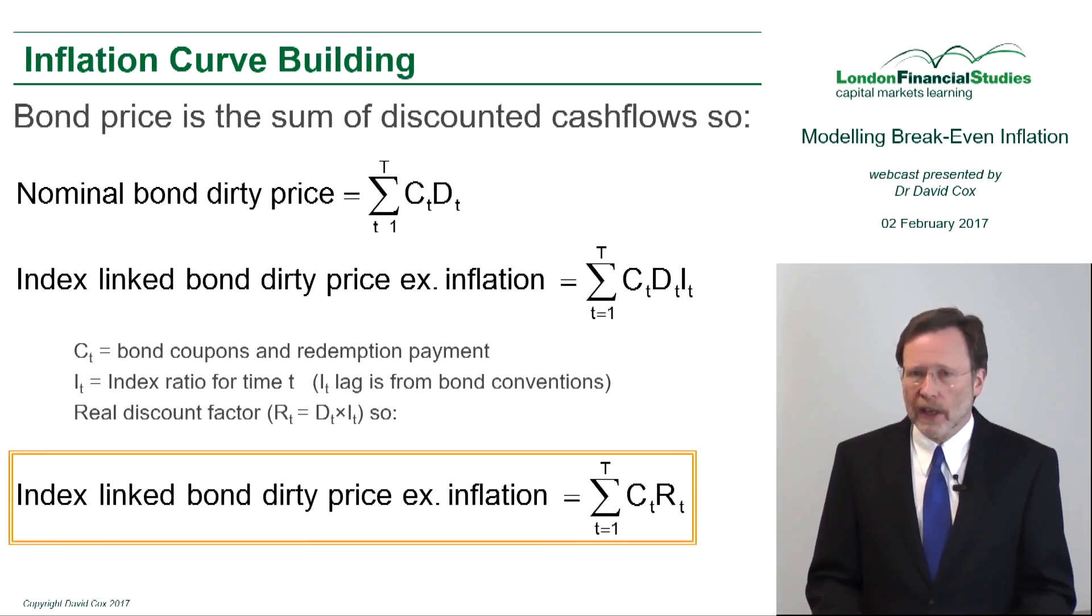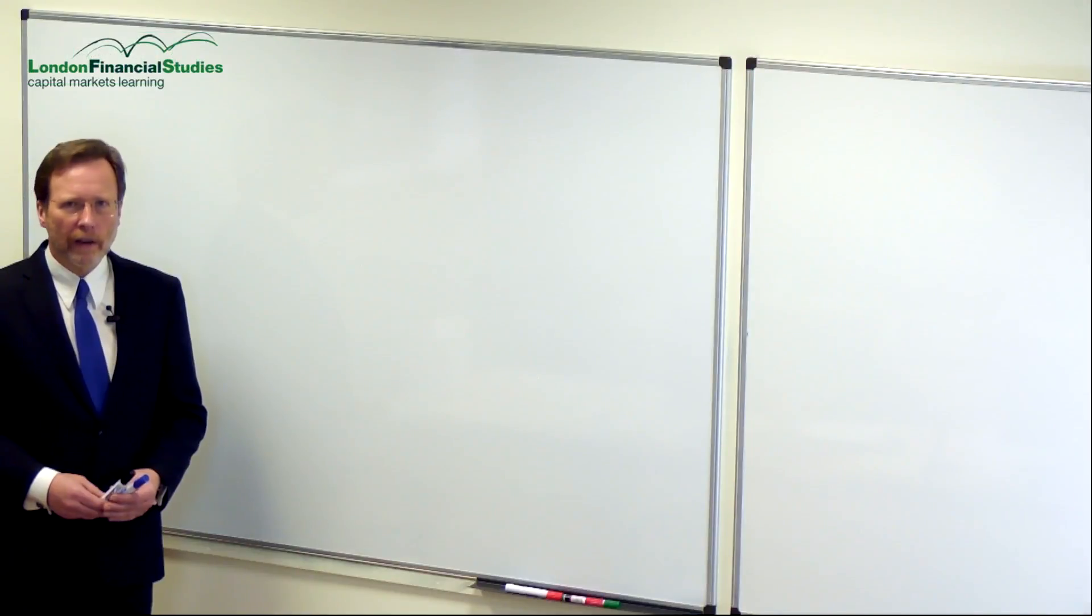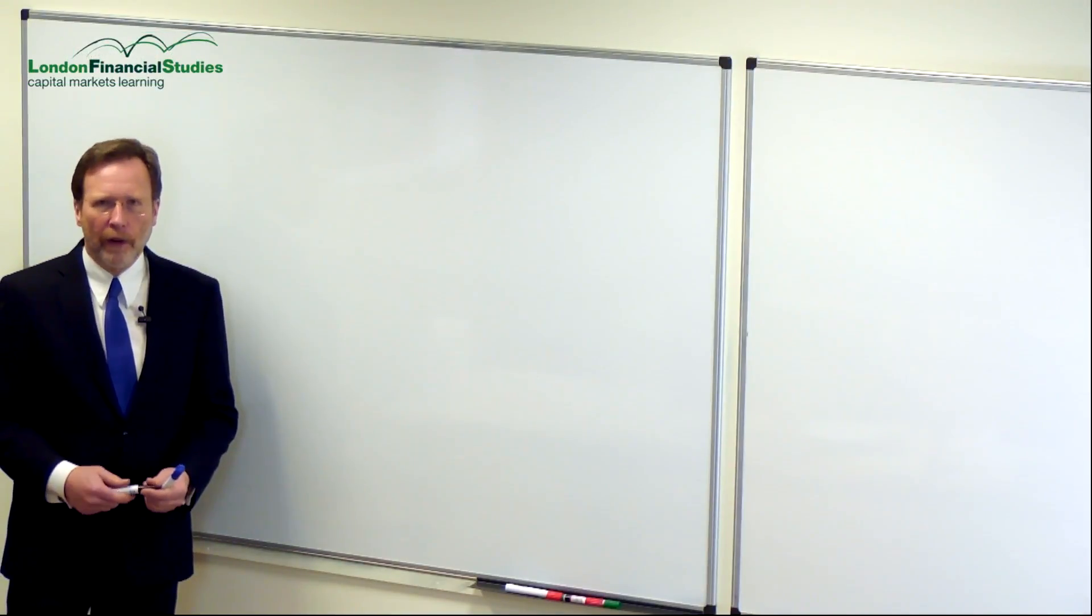Just looking at a standard index-linked bond, we know that the price of a nominal bond is just the sum of discounted cash flows, where the cash flows incorporate the coupons.